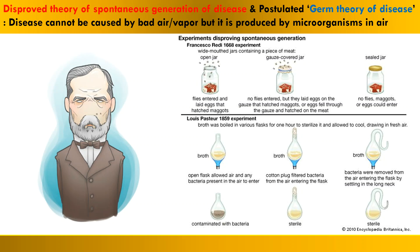Pasteur stated that disease is not caused by bad air or bad vapor but by microorganisms present in the air. He performed an experiment using an open jar with eggs — flies entered and hatched maggots. When he covered the jar with gauze, no flies entered and the eggs were safe. When he sealed the jar, no flies, maggots, or eggs could enter. He performed a similar experiment using broths: an open flask allowed air and bacteria in, while a closed flask remained sterile. This disproved spontaneous generation.